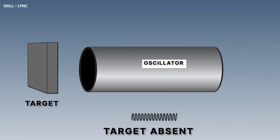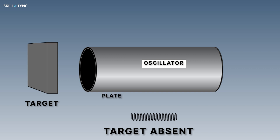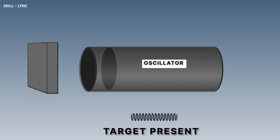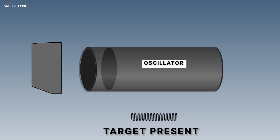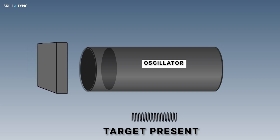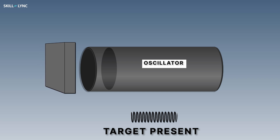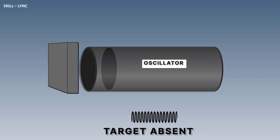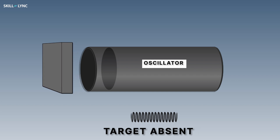The capacitance sensor consists of a metal plate termed as the sensing surface. This sensing surface is internally connected to an oscillator — a circuit that gives a continuous repeated alternating waveform. The capacitance sensor gives an electrostatic field, and as we bring a target plate close to the sensing plate, the oscillator shows a change in its waveform as the electrostatic field changes, varying the output state of the sensor.